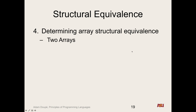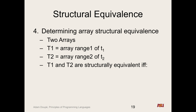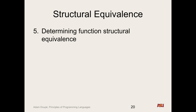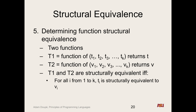Two arrays are structurally equivalent if the ranges are identical — the same number of dimensions and same number of entries — and T1 and T2 are structurally equivalent. Two functions are structurally equivalent if they have the same number of parameters, all parameters are structurally equivalent in order, and finally the return values are also structurally equivalent.